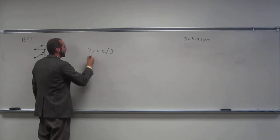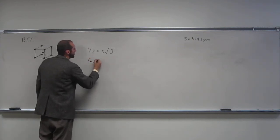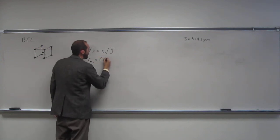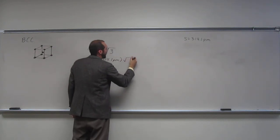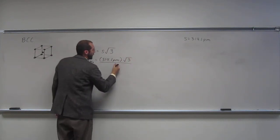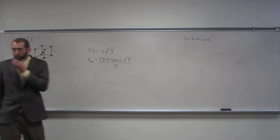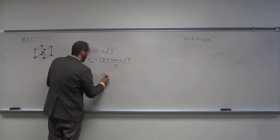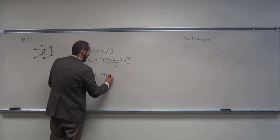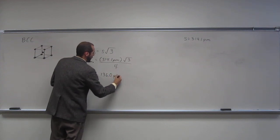So, we're looking for the radius of molybdenum. So just plug and chug, 314.1 picometers times the square root of 3 divided by 4. And that's going to equal 136.0 picometers.